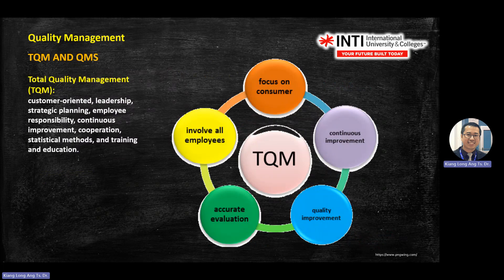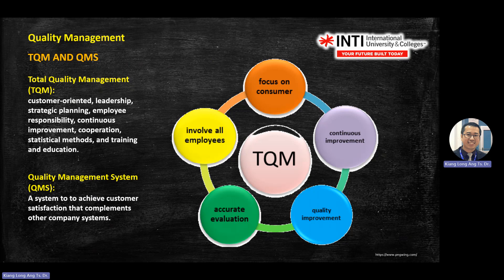A very famous concept in the industry is TQM — Total Quality Management. TQM consists of five elements: consumer focus, continuous improvement steps, quality evaluation, and employee involvement. Another term is QMS — Quality Management System. TQM is how you manage your quality in total, while QMS is the system itself.